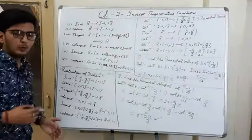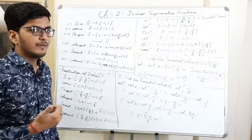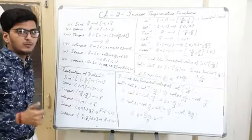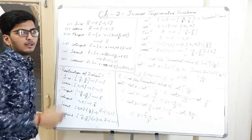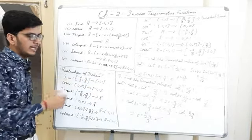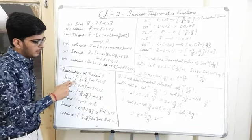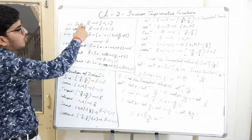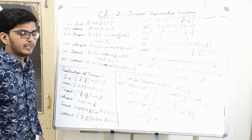So if these functions are not bijective, how can we find their inverses? To find the inverse, we first have to make them one-one and onto. To do that, what we do is restrict the domain of the trigonometric functions. We restricted the domain of sine from ℝ to [-π/2, π/2] to make it bijective.